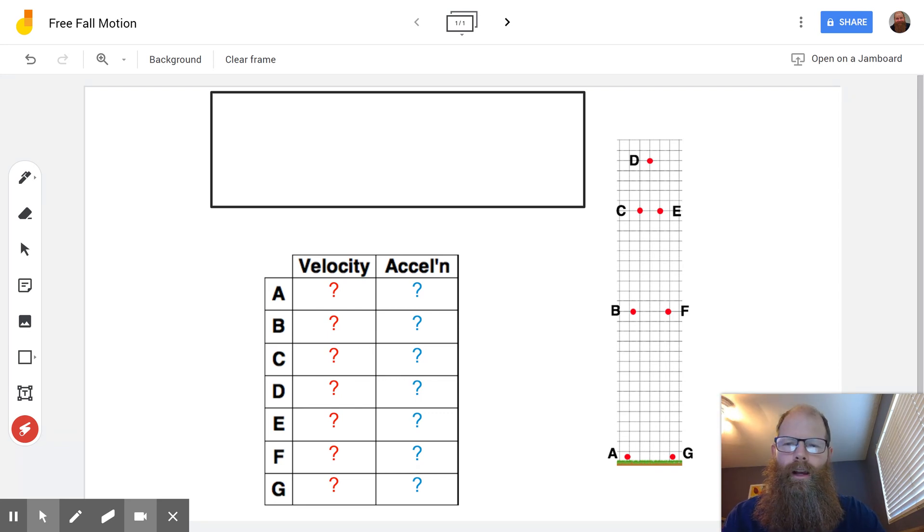We have problems where you've got something at A that's being launched upward, either thrown or launched out of a cannon or something like that, and it goes up and we see in one second intervals where it is after one second, two seconds, three seconds, four seconds, five seconds and six seconds. So the object goes up and comes back down.